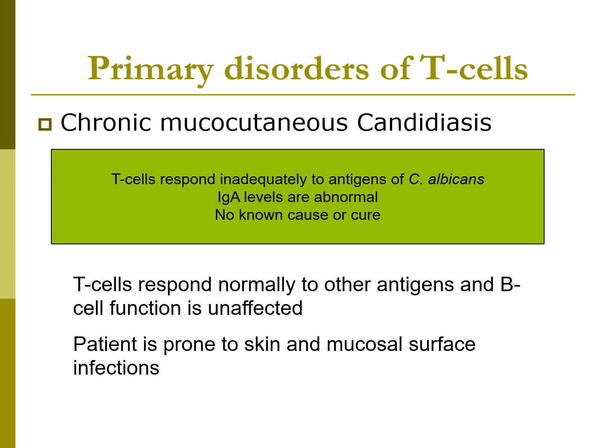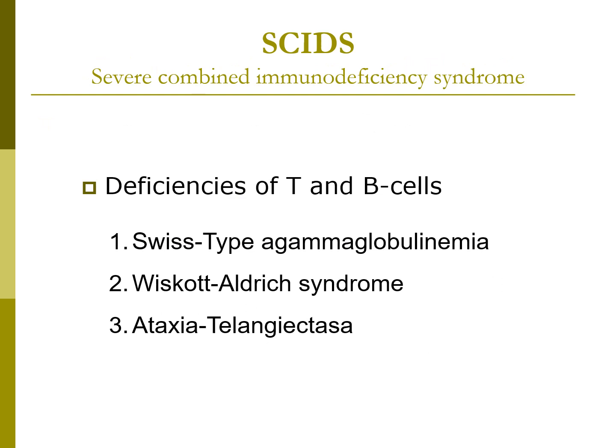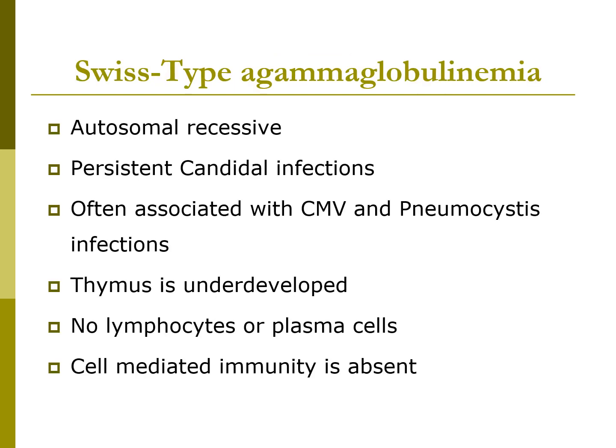Severe combined immunodeficiency syndrome (SCID) is a term for congenital disorders where part or all of the immune system fails to work properly. Examples include Swiss-type agammaglobulinemia, Wiscott-Aldrich syndrome, and ataxia telangiectasia. Swiss-type agammaglobulinemia is a very serious congenital disorder affecting 1 in 100,000 people — most affected die by age 2. It is autosomal recessive, with persistent Candida infections as an early sign, often associated with CMV and Pneumocystis. The thymus is underdeveloped with relatively no lymphocytes or plasma cells in the bone marrow, and cell-mediated immunity is absent. A bone marrow transplant from an HLA-identical sibling may correct this disorder.